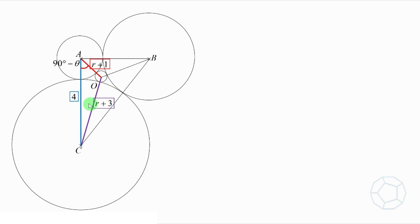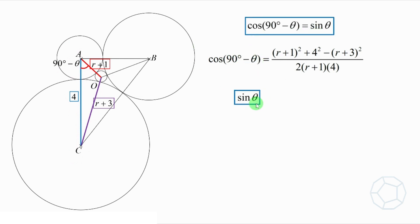Likewise, we play the same trick, that is, to use cosine formula in this triangle. Cosine 90 degrees minus theta is equal to R plus 1 whole square, plus 4 square, minus R plus 3 whole square, all over 2 times R plus 1 times 4. We notice that the left-hand side is special because it can be simplified to sine theta. This is essential as we can relate cosine theta and sine theta together. For the right-hand side, we simplify the numerator as follows. The right-hand side is equal to 2 minus R over 2 times R plus 1.